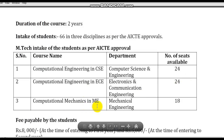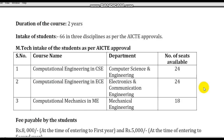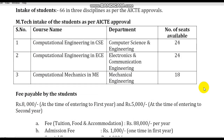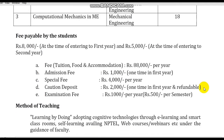The fee structure: application fee is 8,000 rupees at the time of entering the first year, and 5,000 rupees at the time of entering the second year. University fees including tuition, food, and accommodation total approximately 88,000 rupees per year. Admission fee is 1,000 rupees, special fees 4,000, caution deposit 2,000, and examination fee 500 per semester.